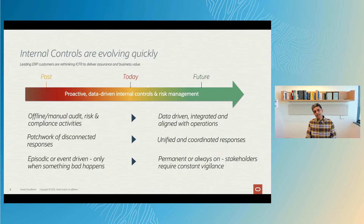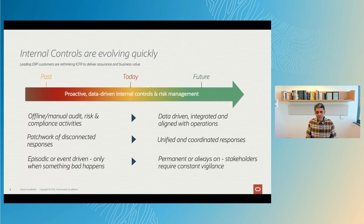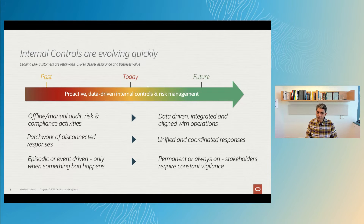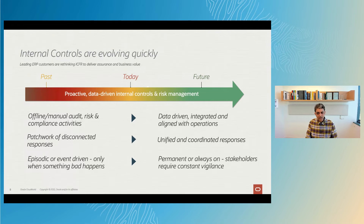Our goal is to enable this evolution, and what is driving it is cloud technology. Cloud technology makes it possible and reasonable to do all of that with a risk, audit, and control perspective. The economics of managing and processing large data volumes has changed dramatically — cloud makes it much faster, more reliable, safer, and cheaper to run deep analysis across millions of data points. Our goal is to harness this technology to provide a more data-driven, evidence-based system of internal control, replacing the current reality which is typically offline, manual, and laborious — and to make it always on and proactive versus episodic or event-driven.